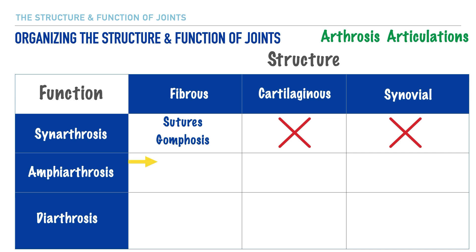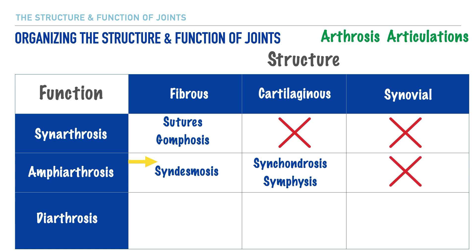In our second row, the example for fibrous slightly movable joints is syndesmosis. Moving to the cartilaginous box, we have synchondrosis and symphysis. Within the body, we only have fibrous and cartilaginous joints that are slightly movable, and we don't have any synovial joints that are slightly movable.